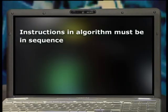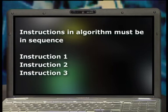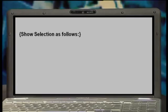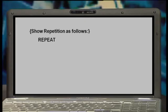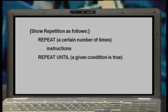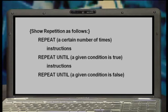Instructions in an algorithm must be in sequence: instruction one, instruction two, instruction three, and so on. Algorithms generally include selection of instructions and repetition of instructions. Selection means the program has to select one set of instructions to follow if a given condition is true, and a different set of instructions to follow if the condition is false. Repetition means the set of instructions must be repeated. To show selection, we write: if, when the condition is true, then do one set of instructions; or else, if the condition is false, do a different set. To show repetition, we write one of the following: repeat a certain number of times — instructions; repeat until a given condition is true — instructions; repeat until a given condition is false — instructions.